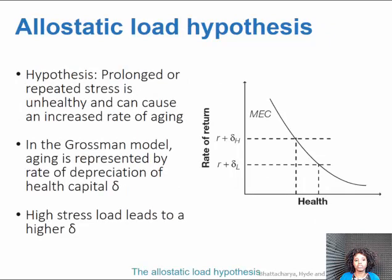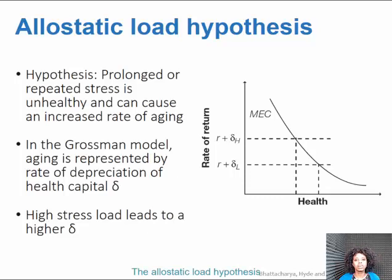Next is the allostatic load hypothesis. This is the idea that prolonged or repeated exposure to stress is unhealthy and it can cause an increased rate of aging essentially. In the Grossman model, aging is represented by the rate of depreciation of health capital, which is signified by delta.